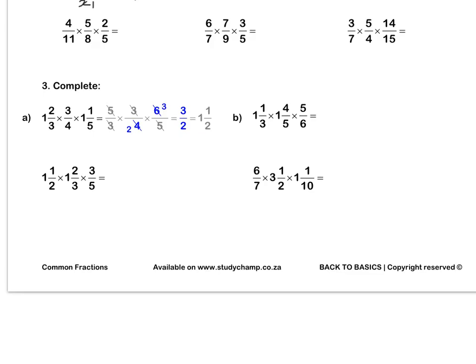Question 3: we have 3 fractions multiplied by one another. We first rewrite the mixed numbers as improper fractions. Then we simplify 5 and 5, 3 and 3. Our 6 and our 4, we divide both by 2 to get 3 and 2. We multiply out to get three halves, which is 1 and a half as a mixed number. Let's complete B together. 1 and one third is four thirds, times by 1 and four fifths, which is nine fifths, multiplied by five sixths. Now we can simplify our 5 and our 5. Our 4 and our 6, we can divide by 2 to get 2 and 3. Then we can simplify our 3 and our 9 by dividing by 3. Lastly, we can simplify the 3 and the 3. And we multiply out to get 2 over 1, or a final answer of 2.